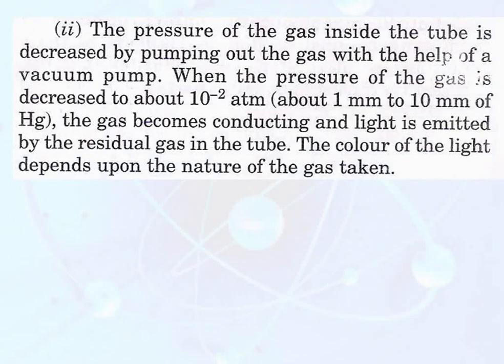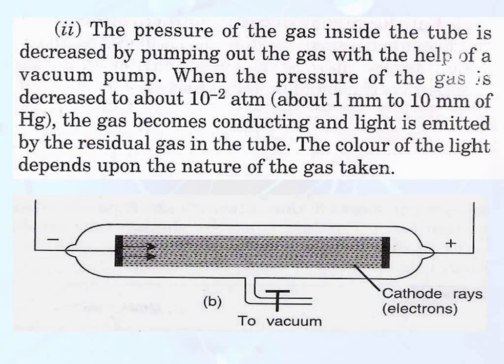When the pressure of the gas inside the tube is decreased by pumping out the gas with the help of a vacuum pump — that is, when the pressure is reduced to about 10 to the power minus 2 atmosphere — the gas becomes conducting and light is emitted by the residual gas in the tube. The color of the light depends upon the nature of the gas taken, and faint lighting was produced within the discharge tube on decreasing the pressure.